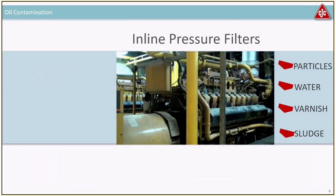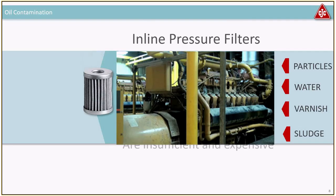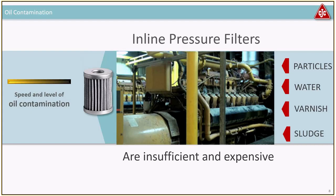If you have questions, you're welcome to type them into the instant message field. Many machines already have an inline pressure filter built in, which primarily takes care of particles, but they're not designed to keep the oil clean and make it cleaner over time. Very often the oil will actually become more and more contaminated. Inline filters do not remove water, varnish, and sludge — you're only focusing on particles. A very fine inline filter, like a 3 or 5 micron filter on a turbine, can be very expensive to run.